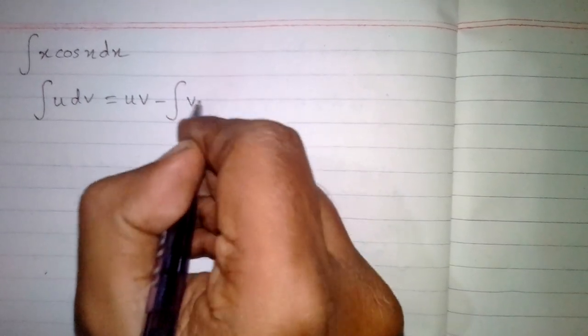What is integration by parts? The formula of integration by parts is integral of u dv is equal to u v minus integral of v du.